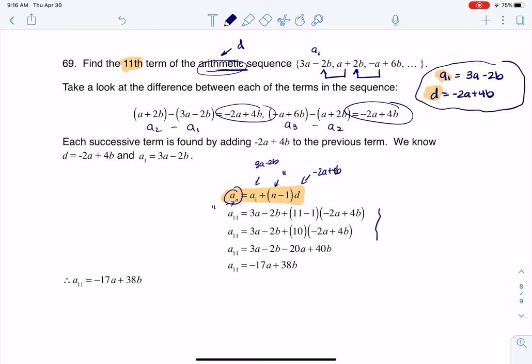So at that point, it's a bunch of algebra, right? I plug in all of those values, I distribute, I multiply, I collect like terms. And a sub 11 is negative 17a plus 38b. All right? Thanks so much. Bye.